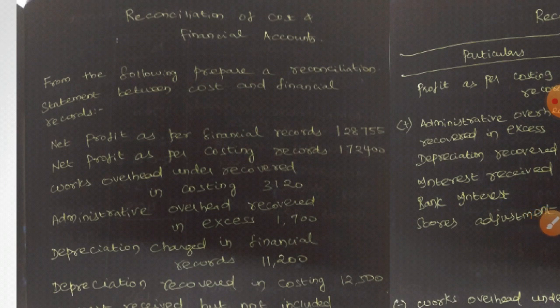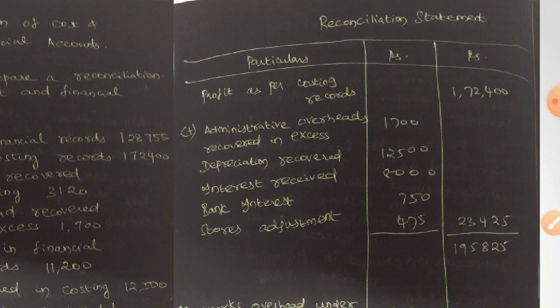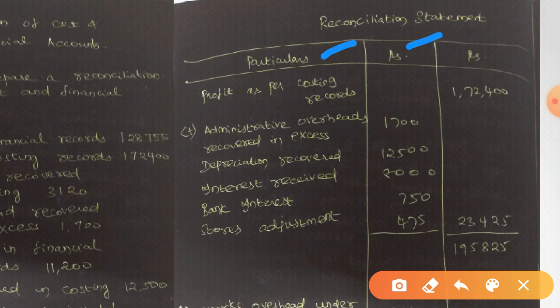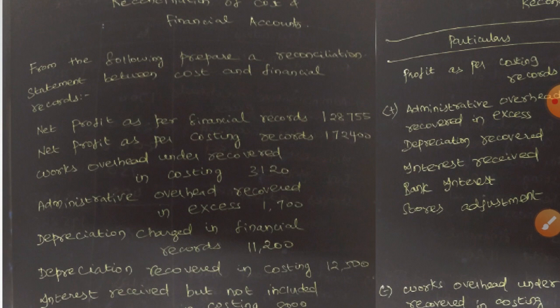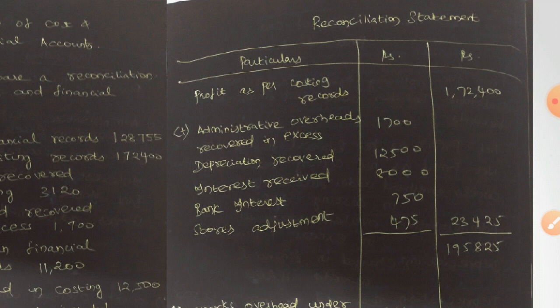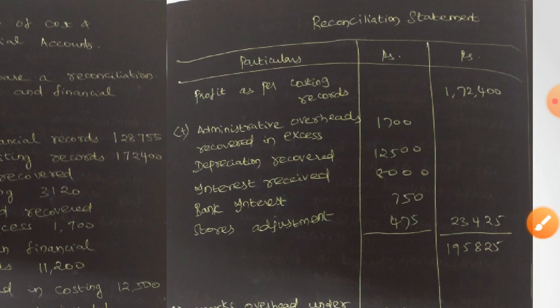When you start the solution, the format of your reconciliation statement will look like this. First, give a heading: Reconciliation Statement. It will have three columns — the first is the Particulars column, the second is a Rupees column, and the third is another Rupees column. We use costing records as our base, so profit as per costing records — 1,72,400 — is written directly in the outer column.